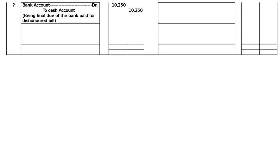Ammar has to pay the banker Rs.10,100 — that is Bank account debited to Cash account Rs.10,100, being the final amount paid to the bank for the dishonored bill. In the books of Bhola there will be no entry, as he is in no way concerned with the bank.